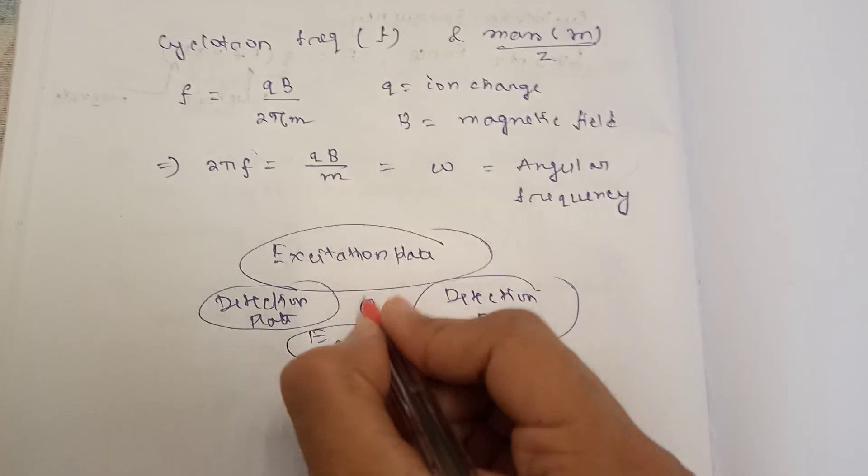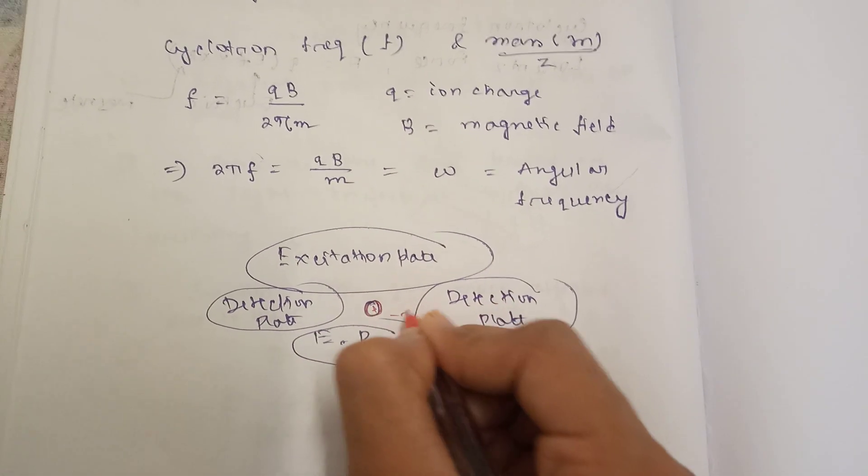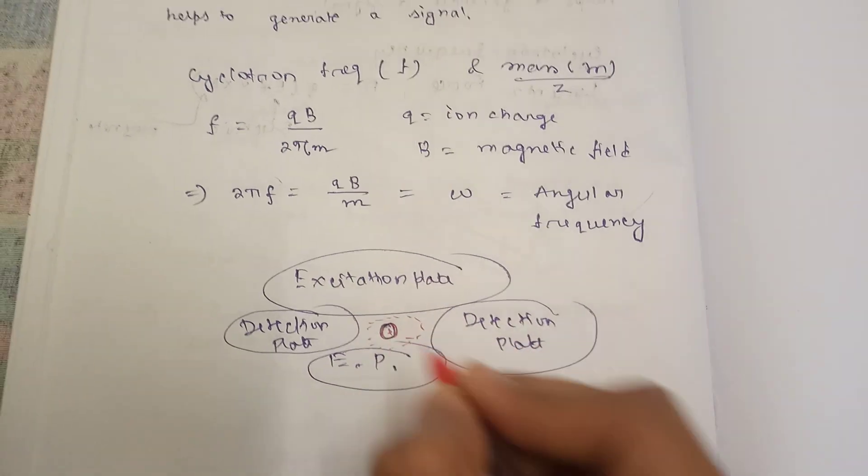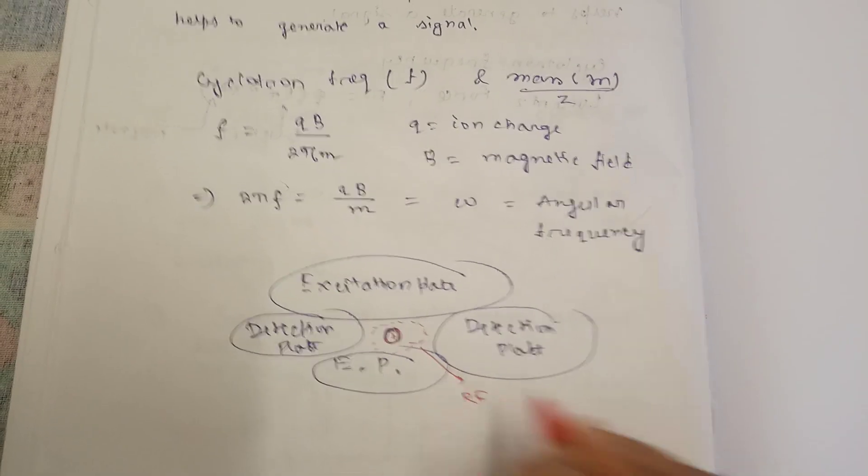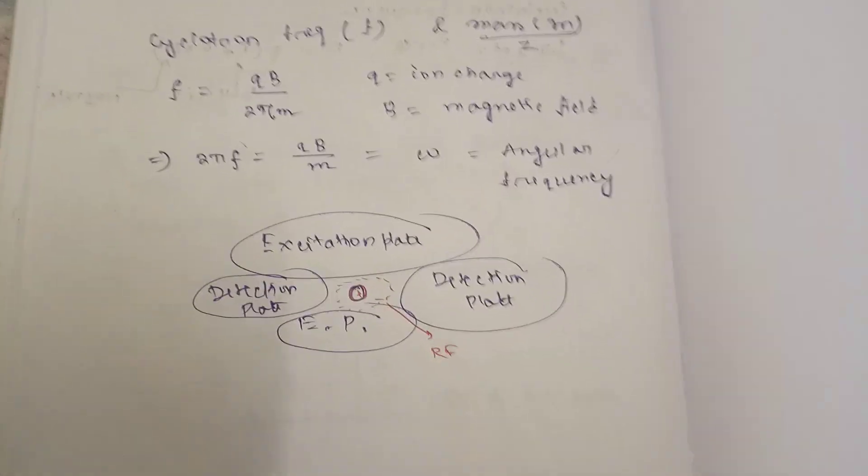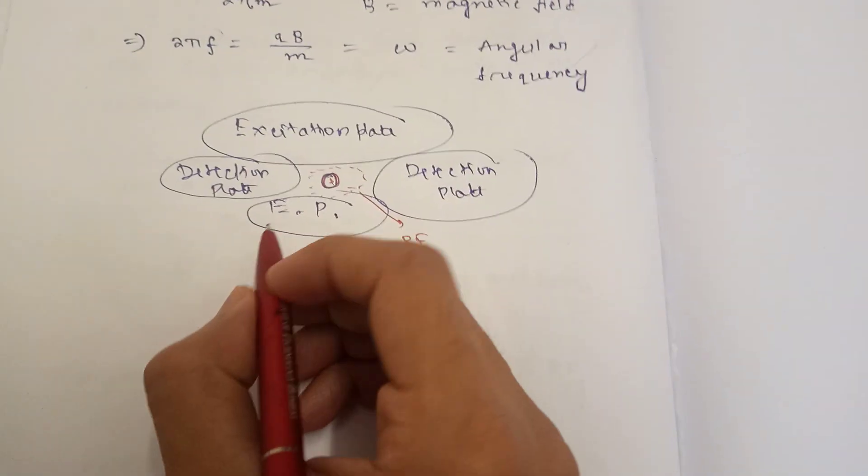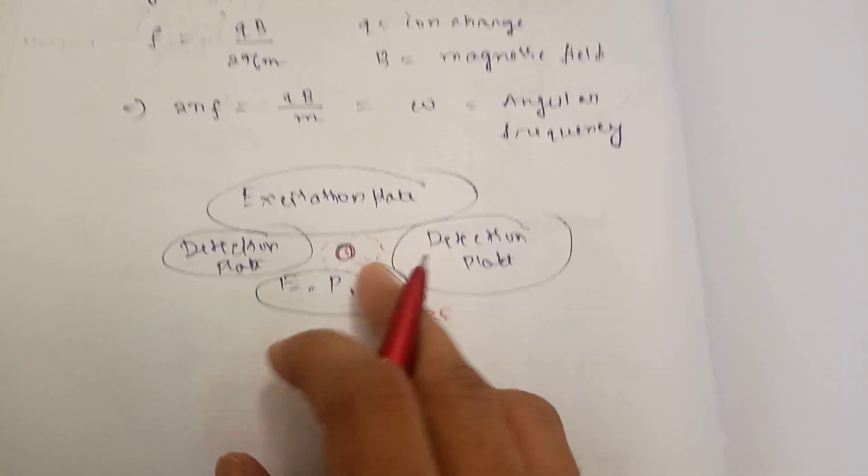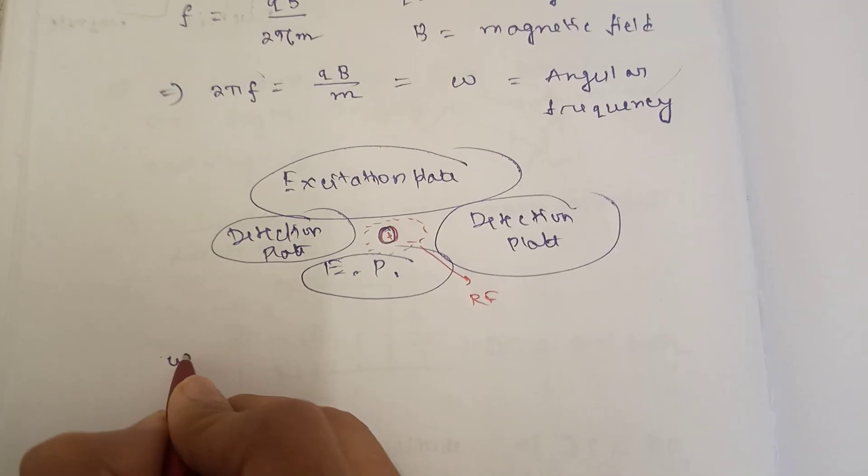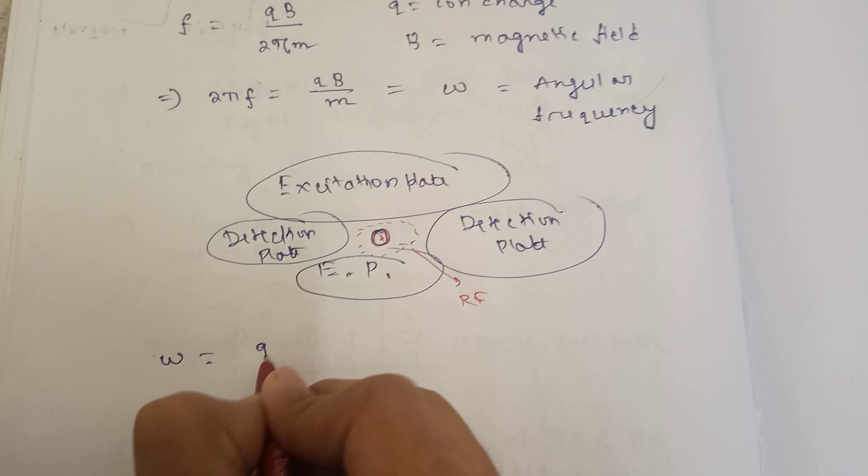So ions here will be excited by the radio frequency field. This is the main idea. Now, these vibrational frequencies of the ions are dependent on the size, as you have checked.